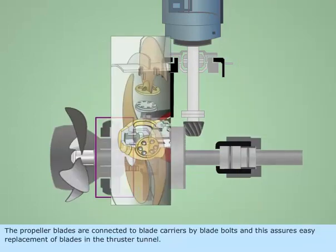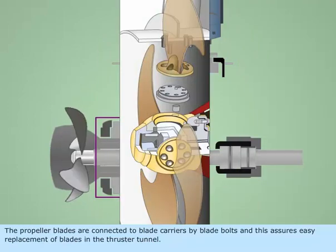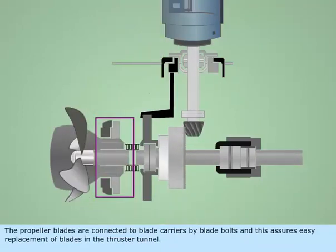The propeller blades are connected to blade carriers by blade bolts and this assures easy replacement of blades in the thruster tunnel.